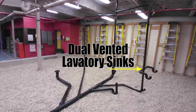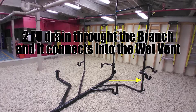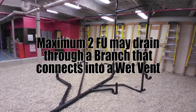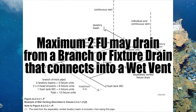Over on the other side I have a dual vented set of lavs — lavs are one fixture unit each — draining down into a branch, giving us two fixture units draining through that branch connecting into the wet vent. That is the maximum allowed through a branch into a wet vent. The last piece of this code is a less common one: we can actually connect these fixture drains or branches into the wet vented water closet trap arm. There is a picture right from the code book showing how we do that. The maximum is still two fixture units for either a branch or a fixture drain.